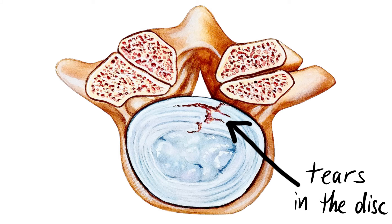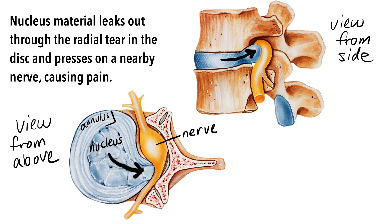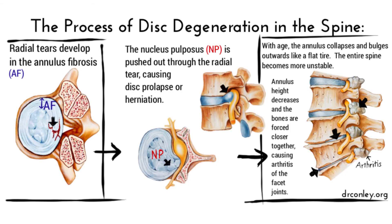Radial tears are the most destructive and they start at the center of the disc. This allows the nucleus pulposus — the jelly-like material — to leak out of the center of the disc through those long radial tears and eventually can leak out of the disc or cause disc herniation or prolapse. Sometimes under prolonged pressure, the jelly-like substance of the nucleus may be pushed out past the outer border of the annulus, and this is what leads to prolapse of the nucleus pulposus.